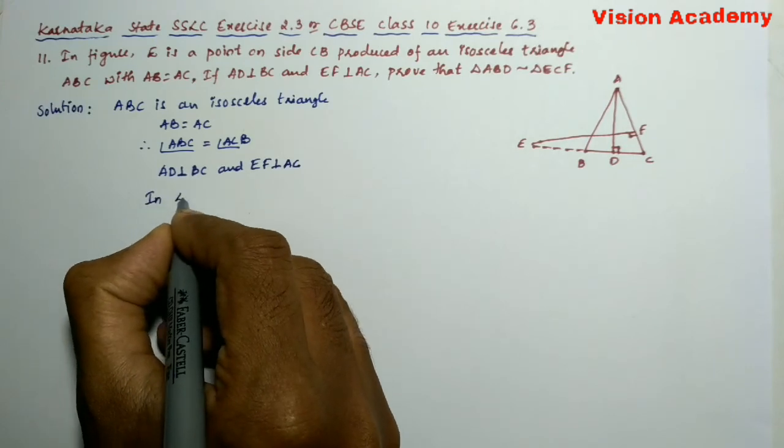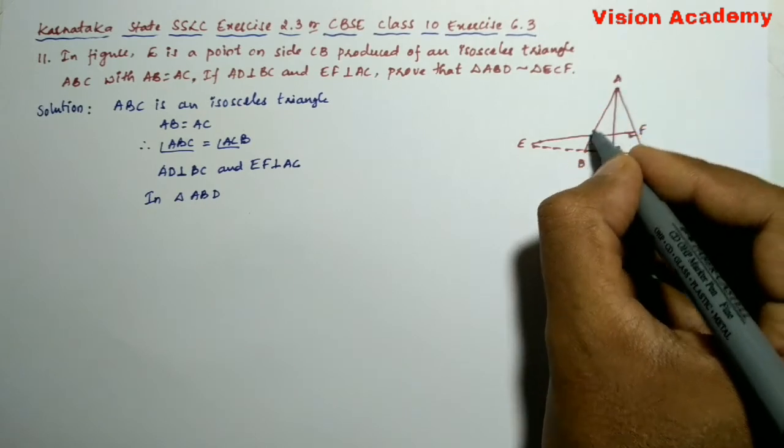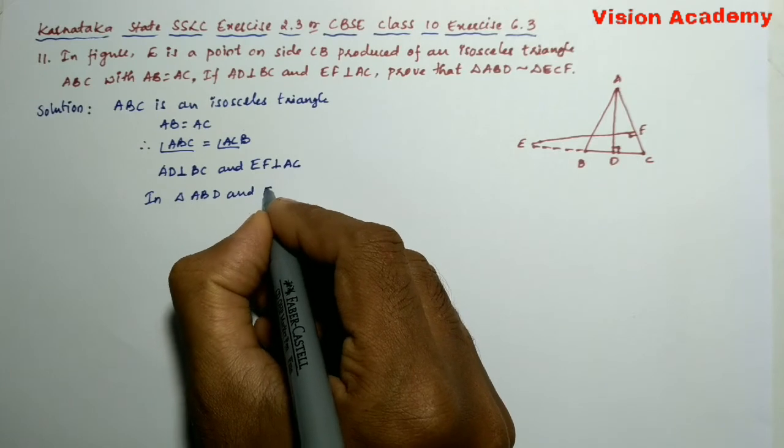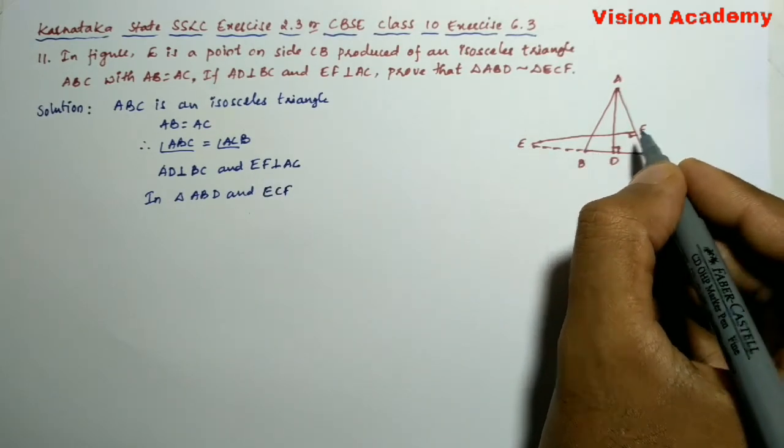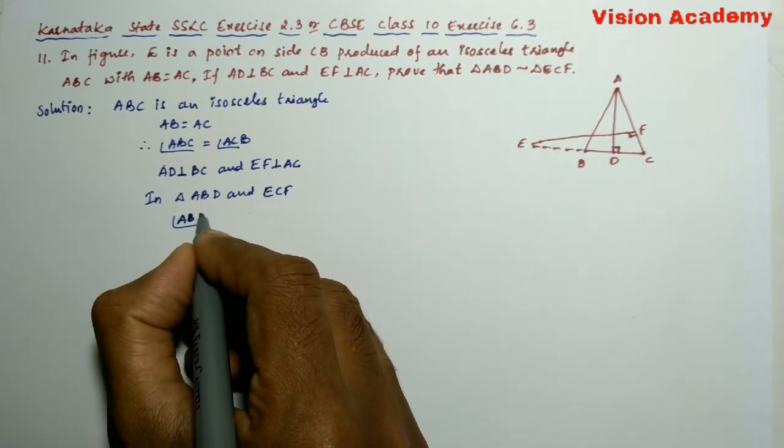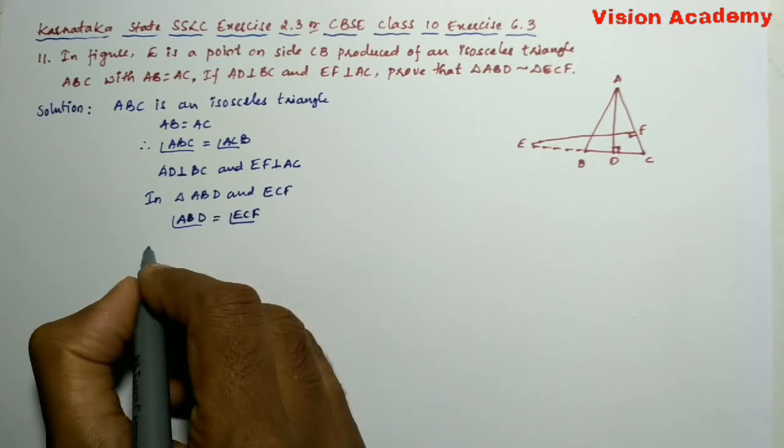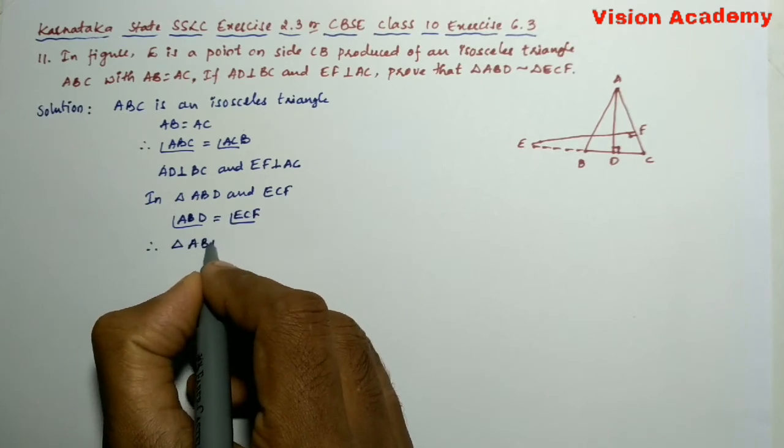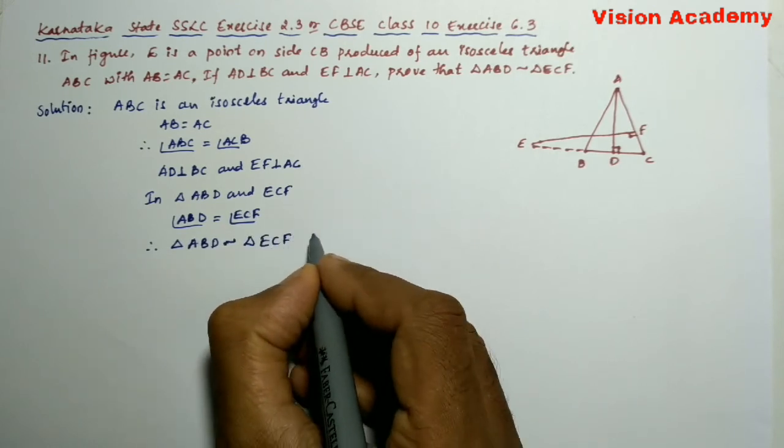In triangle ABD and ECF, angle ABD is equal to angle ECF. Therefore, triangle ABD is similar to triangle ECF.